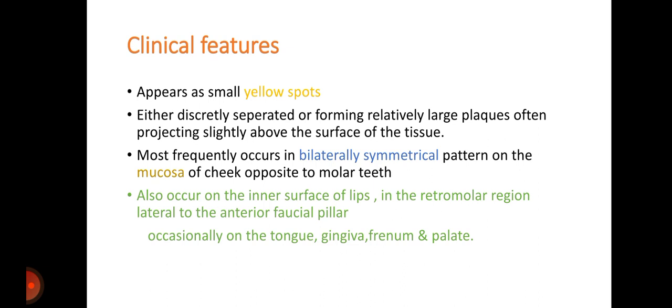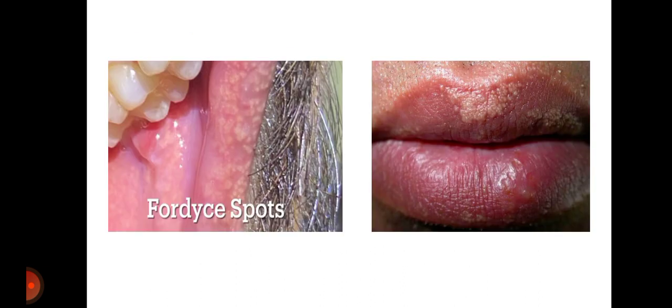It most frequently occurs in a bilaterally symmetrical pattern on the mucosa of the cheek opposite the molar teeth. It also occurs on the inner surface of the lips, in the retromolar region, lateral to the anterior faucial pillar, and occasionally on the tongue, gingiva, frenum, and palate.